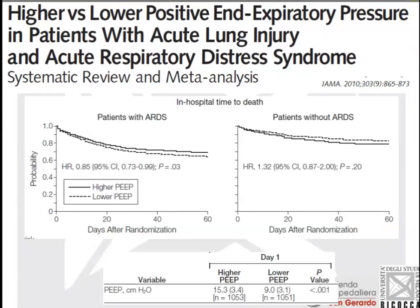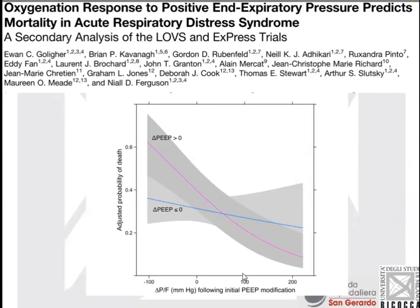This meta-analysis showed that even mixing studies using completely different approaches — like the LOV study and EXPRESS trial — patients with moderate and severe ARDS benefited from higher PEEP in terms of mortality, whereas this was not the case for mild ARDS. However, we are learning more and more that PEEP setting should not just take into account patient condition at baseline, but also the response to PEEP, as nicely shown by Claude.